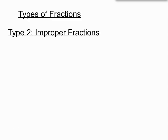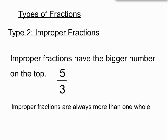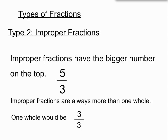Our second type of fractions are improper fractions. The top is bigger than the bottom in an improper fraction — so 5 over 3 is an improper fraction. There's nothing actually wrong with it; it's just that the bigger number is on top. They always have a value more than one whole. In this case, 3 out of 3 would be one whole, and we've got 5 over 3, so that's bigger than 1.